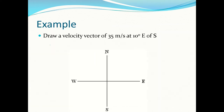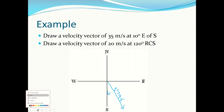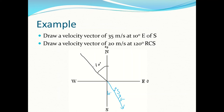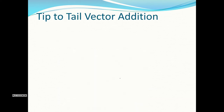Now we can draw velocity vectors. If a velocity vector is 35 m/s at 10° east of south, the arrow points 10° from south toward east, and its length represents 35 m/s. For another vector at RCS 120°, that's 30° past the 90° mark counterclockwise, so the arrow is drawn at that angle — and since it's only 20 m/s, the arrow is drawn shorter.